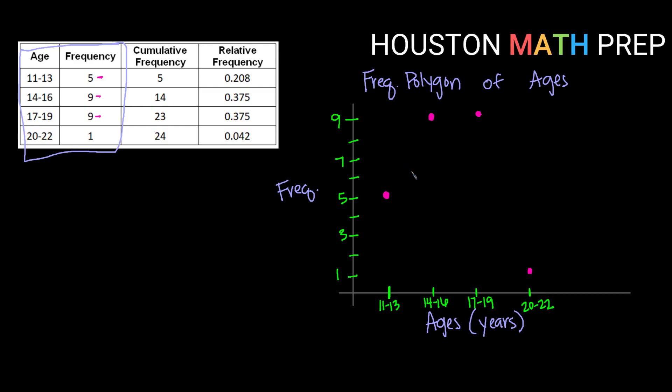And then I'm going to go in and I'm going to connect my dots with straight lines. So a straight line from dot 1 to 2, straight line from dot 2 to 3, and straight line from dot 3 to 4. And that is a frequency polygon for my age data.